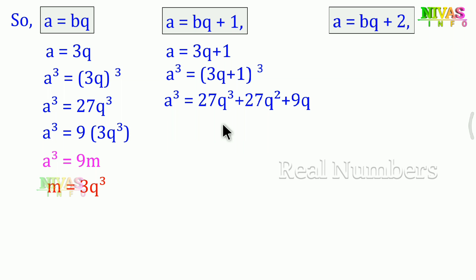Expanding: (3q)³ + 3(3q)²(1) + 3(3q)(1)² + 1³ = 27q³ + 27q² + 9q + 1. Taking 9 common from the first three terms: 9(3q³ + 3q² + q) + 1. This gives us 9m + 1, where m = 3q³ + 3q² + q.